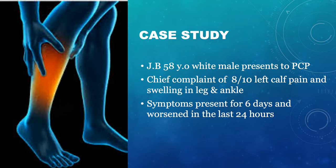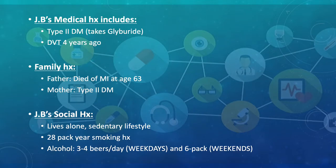These symptoms have been present for 6 days and worsened in the last 24 hours. JB's medical history includes type 2 diabetes and DVT 4 years ago. He has a family history of his father dying at age 63 from an MI and his mother who has type 2 diabetes.